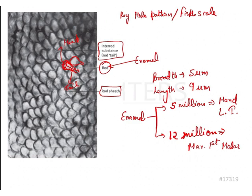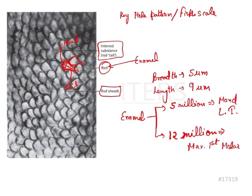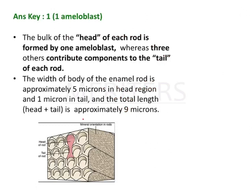Coming to the main topic — the arrangement. Consider these as the ameloblasts. These ameloblasts are going to form the various crystals and, of course, the enamel rods. The whole enamel architecture will be formed by the ameloblasts. If you see here, this is the head of the rod, and this head is made by only one ameloblast — it is contributed by one ameloblast.